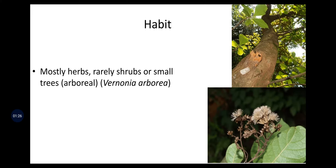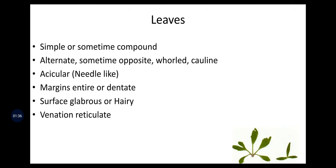The habit is mostly herbs, rarely shrubs or small trees, i.e., arboreal. An example is Vernonia arborea. Leaves are simple or sometimes compound, alternate, sometimes opposite, whorled, and cauline. Acicular means needle-like leaves in some species. Margins are entire or dentate, surface glabrous or hairy, and venation reticulate.